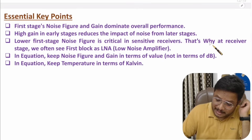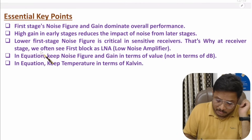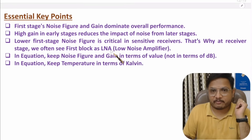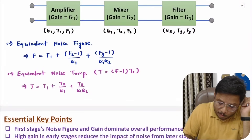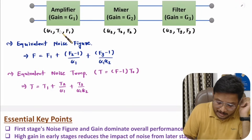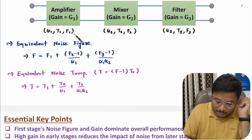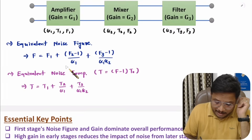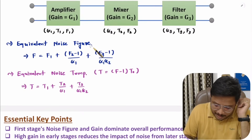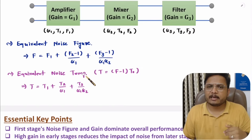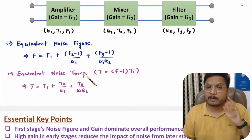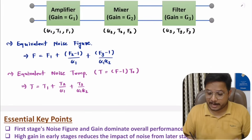That is why at the receiver stage we typically use a low noise amplifier. A low noise amplifier has lower noise, meaning it has a lower T1 and lower F1. This reduces the overall noise figure and overall noise temperature. That is why in a receiver, you will typically observe a low noise amplifier placed in the first block.